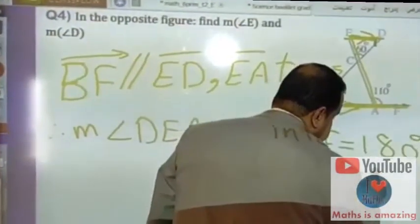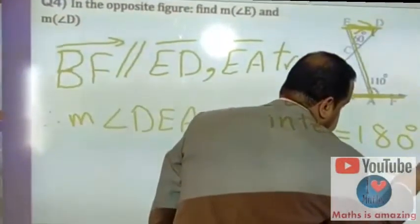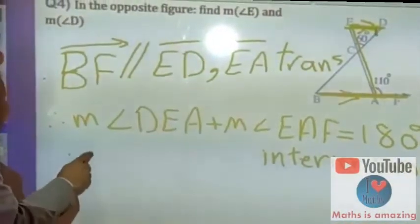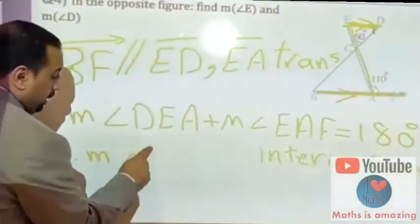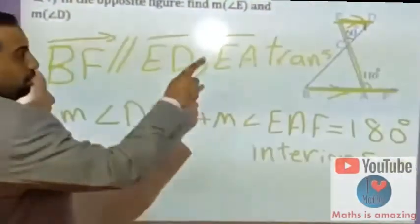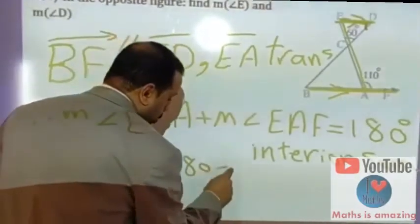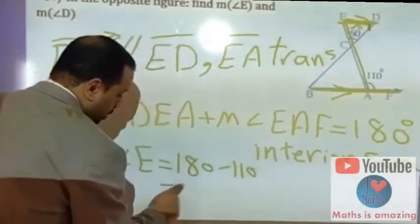On the same side, therefore measure of angle E equals 180 minus 110, which equals 70.